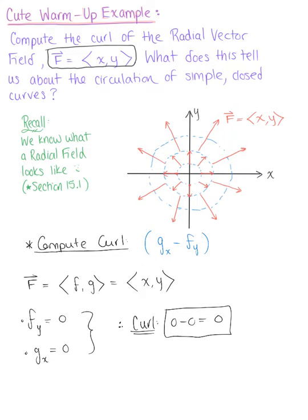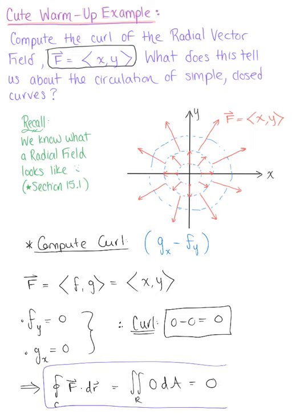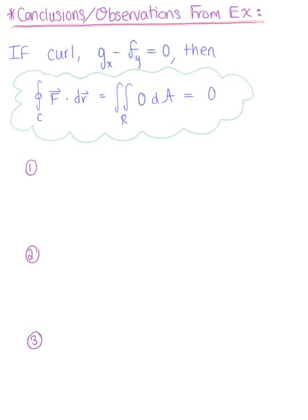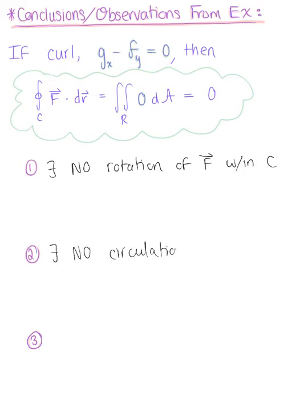Our intuition was correct. Using the equivalent form of Green's theorem, we can see that the circulation of this radial field is zero. If the curl is equal to zero, then there exists no rotation of the vector field within C, which implies there's no circulation on the curve. And last but not least, if the curl is equal to zero, we say that the vector field is irrotational. These are three important conclusions observed from this warm-up example.